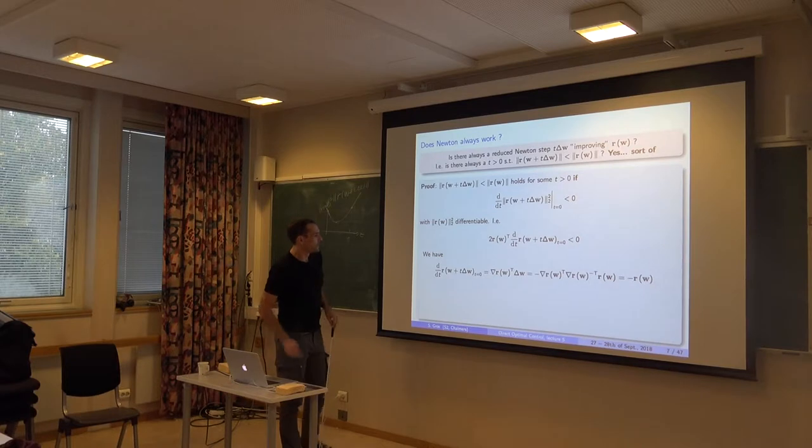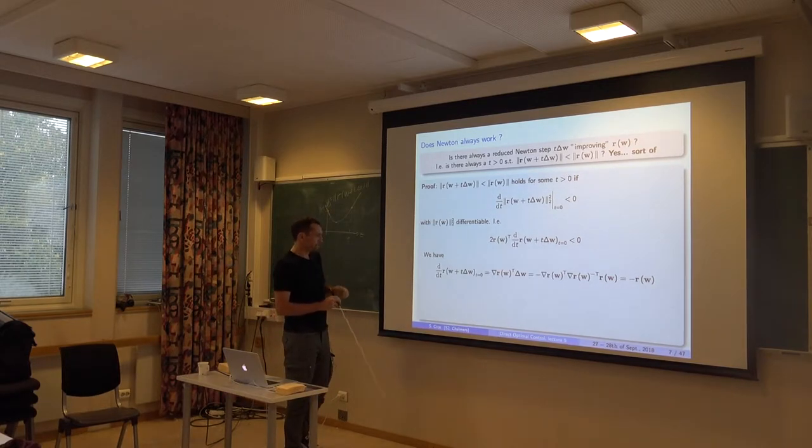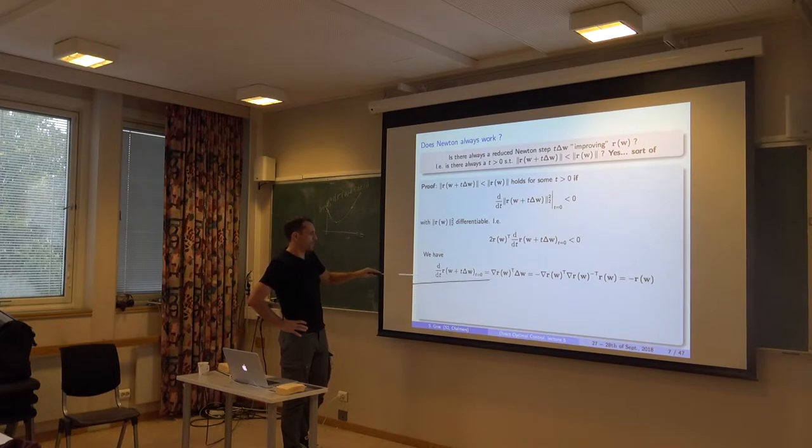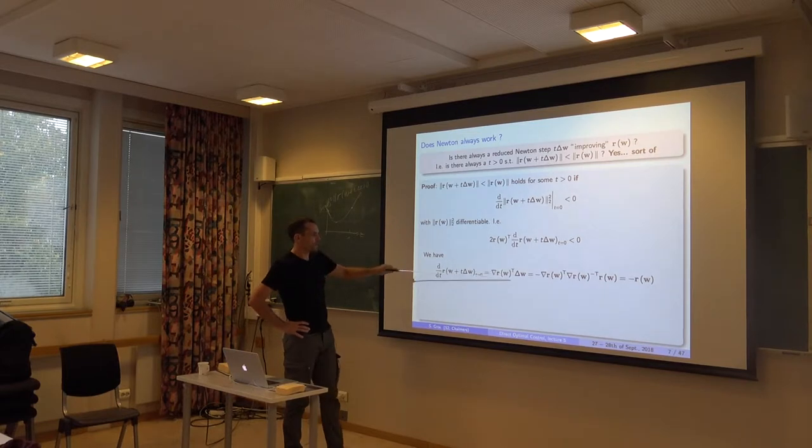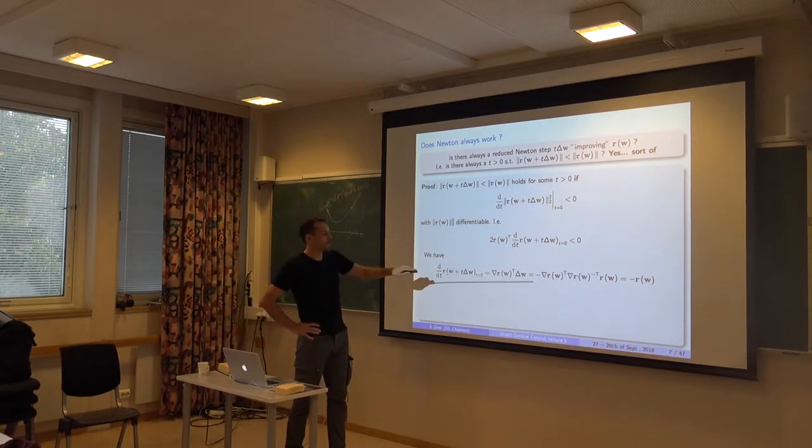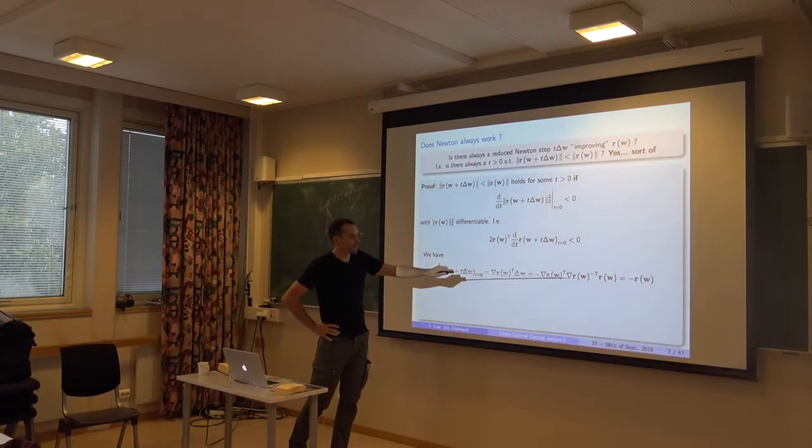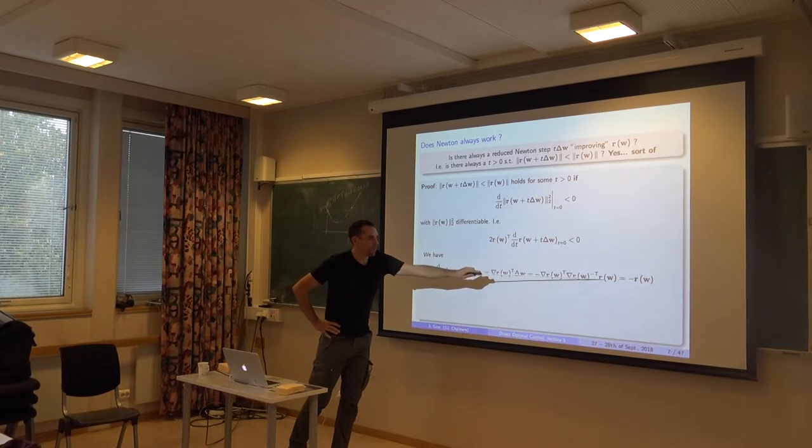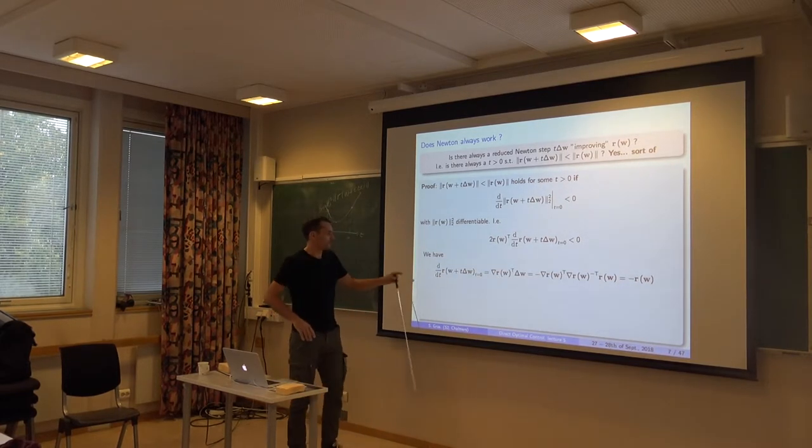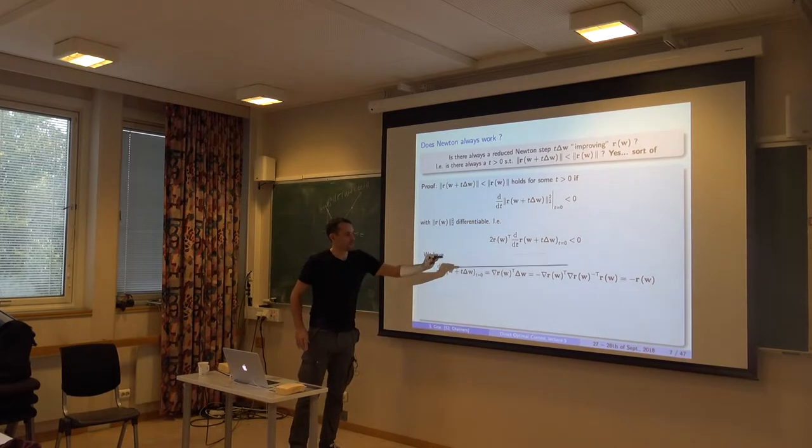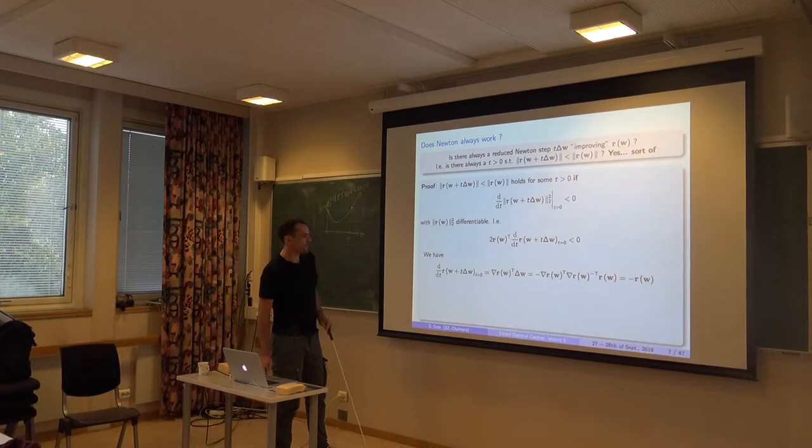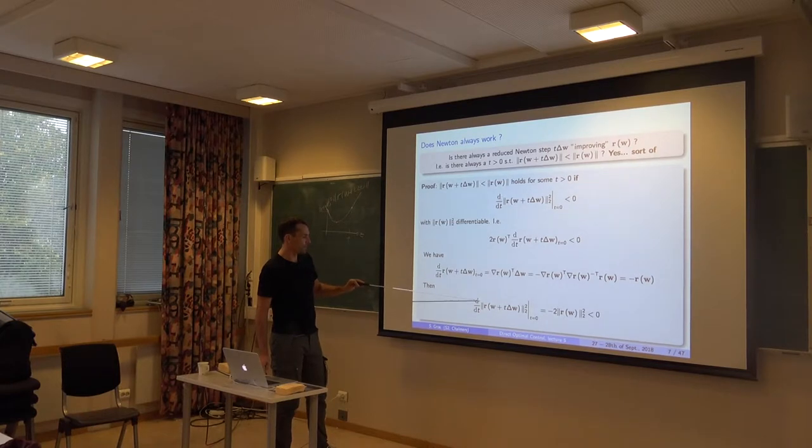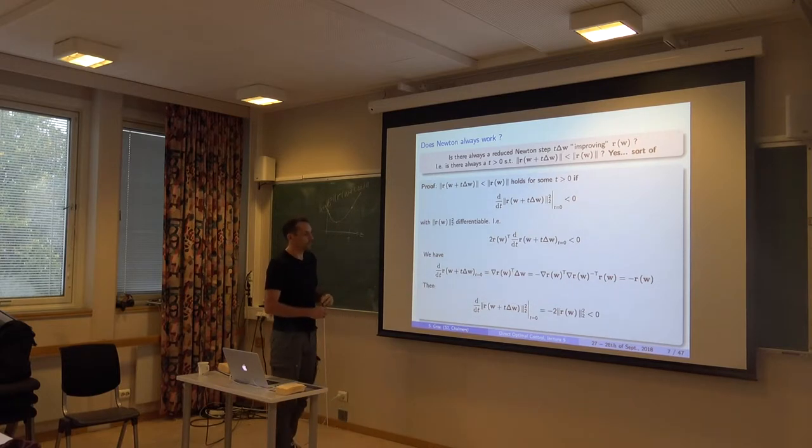And essentially, if the derivative of that thing here is negative at T=0, that means the slope is going down at T=0. Maybe further, for larger T's, it may be going up again. And then the full step may not be improving on my R. But if the slope is negative here, I need to have somewhere a point that is lower than this one. So I must be improving for some T small enough. And we take the square of this to make it differentiable. And then you can just work on a bit of calculus. So this actually turns into that. You can verify this.